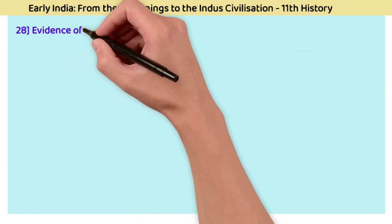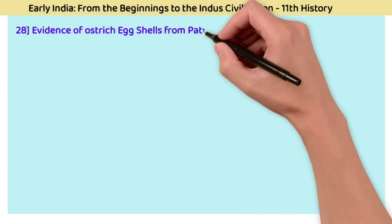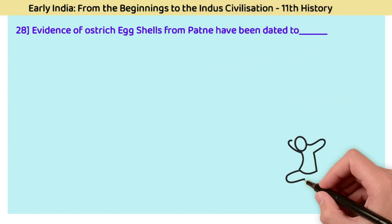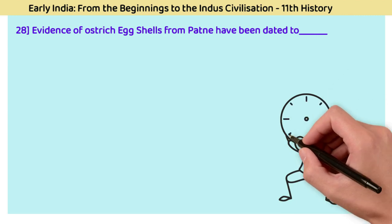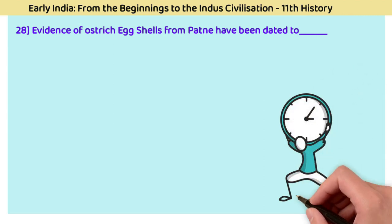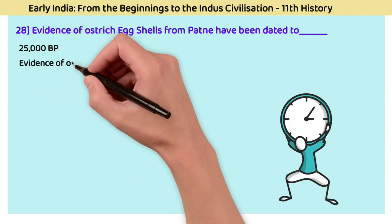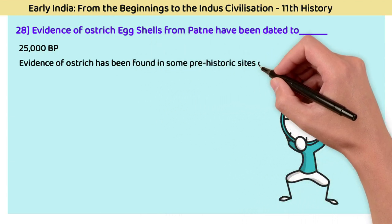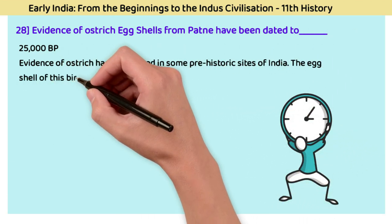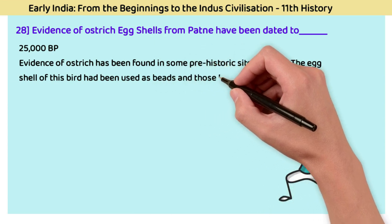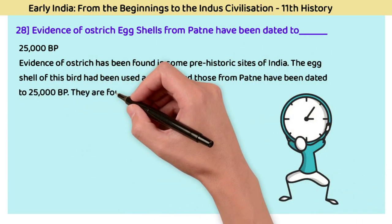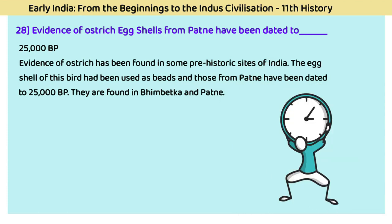Question 28: Evidence of ostrich eggshells from Patne has been dated to? The answer is 25,000 BP. Evidence of ostriches has been found in some prehistoric sites of India. The eggshells of this bird were used as beads, and those from Patne have been dated to 25,000 BP. These are also found in Bhimbetka and Patne.